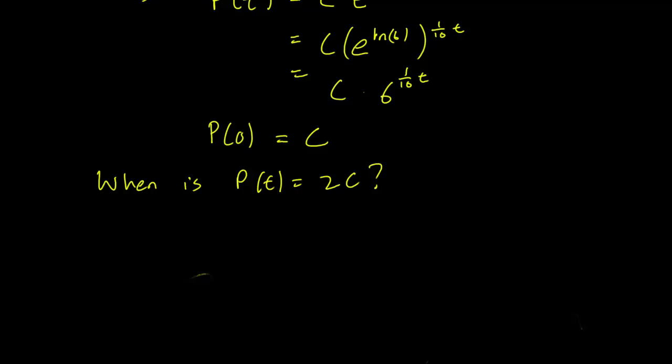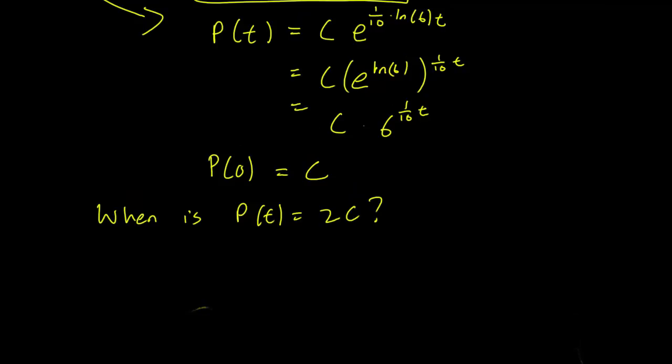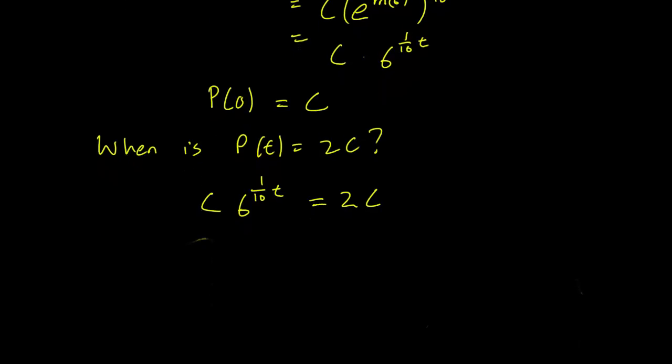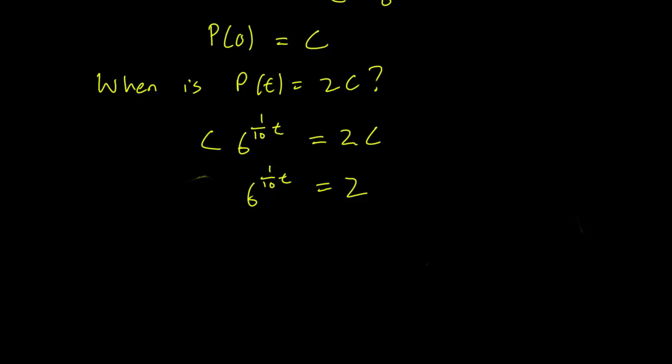So when is P(t) equal to 2C? And we can write down our expression for P(t) that we had over here. So the question is, for what t is C times 6 to the 1 over 10t equal to 2C? We can cancel Cs on both sides. Again, we are assuming that C is non-zero, but that's not too bad to assume.